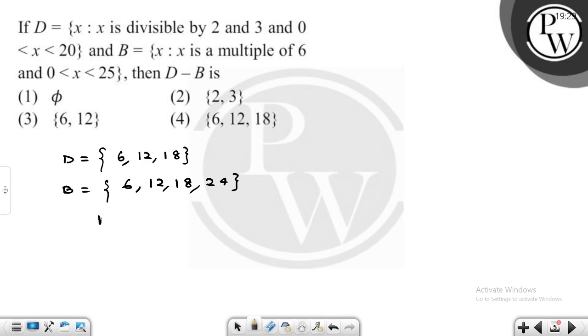This is D minus B. D minus B means we subtract B from D. What remains? 6 is in both D and B, so it gets removed. The answer is empty set, which means the first option has worked out.